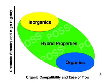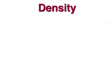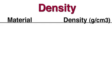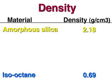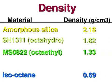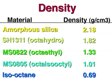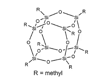In addition, by changing the organic group, POSS can be tuned to the needs of your product. For example, inorganics like amorphous silica tend to have high densities, while organics are much less dense. By changing the size of the organic group and therefore the organic character of the POSS, a range of intermediate densities can be achieved.